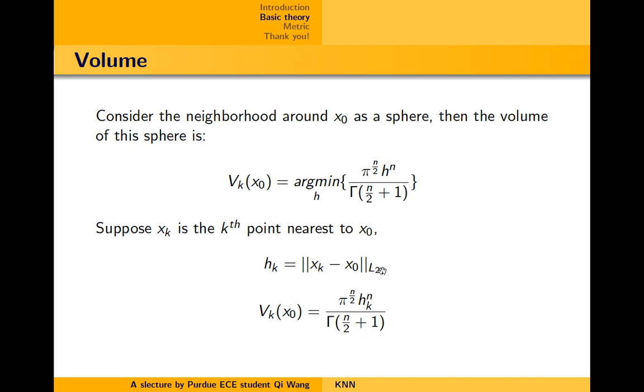And we can calculate h_k like this. This is the L2 norm, which is the Euclidean distance. This is the most common situation we use. I will talk more about it later. So the volume of x₀ can be calculated like this. Also, this is a gamma function. The definition of the gamma function is that Γ(n) is equal to (n-1) factorial.